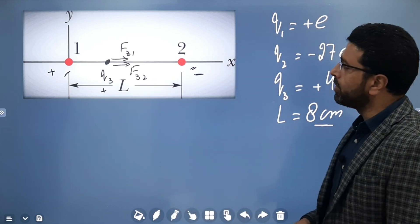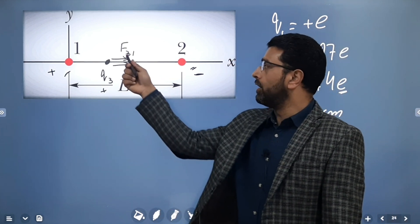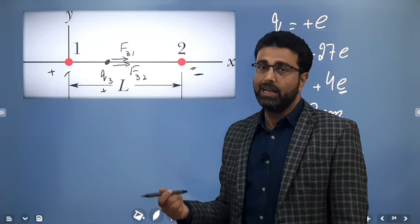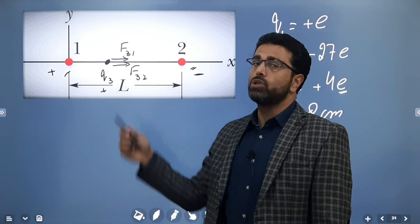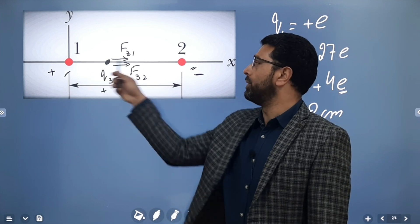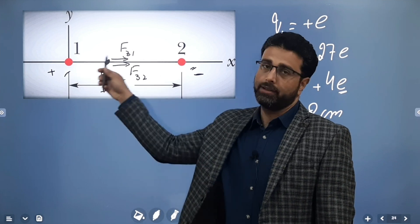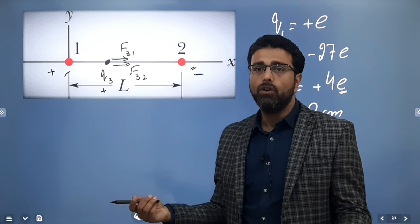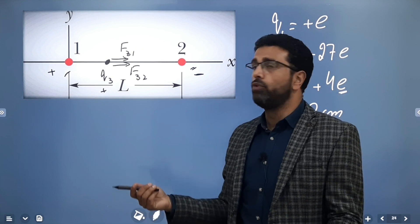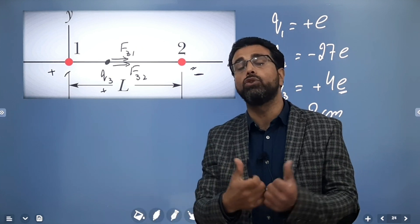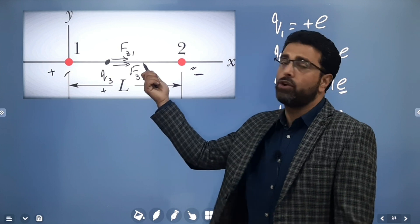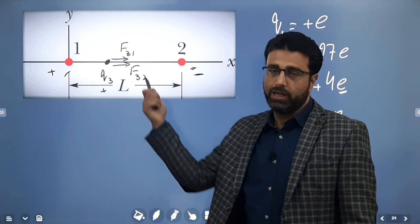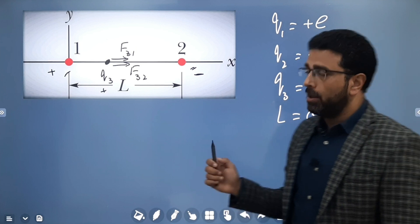Now there is one important point: two forces are in the same direction, so they will add up. This means the minimum force can never be zero in between the two particles, because to get zero net force we would need two forces of equal magnitude but in opposite directions — and they are not in opposite directions. So net force cannot be zero.